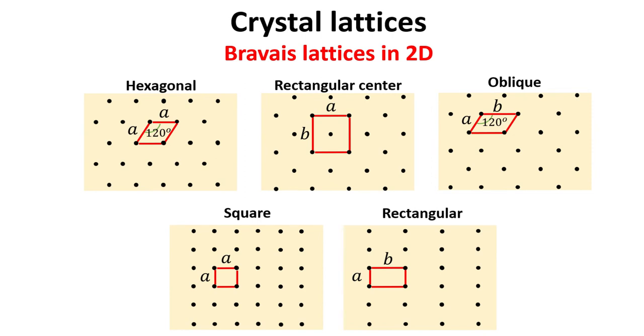In two dimensions, there are only five inequivalent Bravais lattices. These are the hexagonal, the rectangular center, the oblique, the square and the rectangular lattices. The 2D Bravais lattices are mainly differentiated by the distance between neighboring points, illustrated by the red lines, and the angles shown in the figure above.